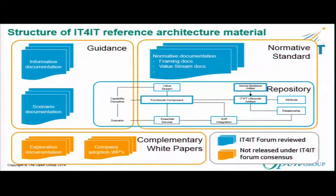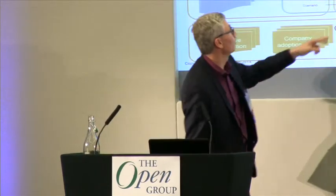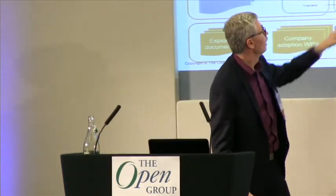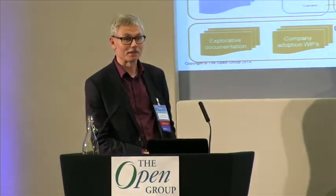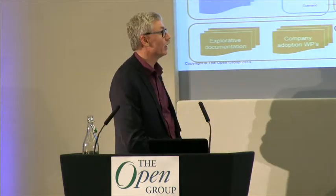There's something called a functional component, which is the essential system or component that delivers an aspect of a value stream. Functional components relate to value streams, and there are artifacts — each functional component typically controls one artifact. So for instance, an incident component controls the incident artifact. No surprise there. That's actually the area most people can agree on. As you move on to other parts of the reference architecture, there's much more to be discussed, because it's a less mature area of the IT value chain.